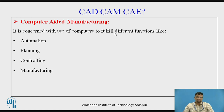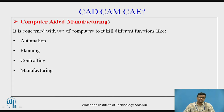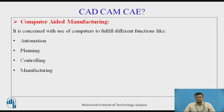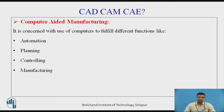In computer-aided manufacturing, there is the assistance of the computer to fulfill different functions regarding manufacturing. One key function is automation — with computer assistance, conventional machine tools such as conventional lathe machines, drilling machines, or milling machines are replaced. In industrial automation, CNC lathe machines and CNC milling machines are used for higher rates of production and greater productivity in the manufacturing sector.